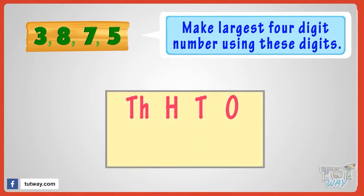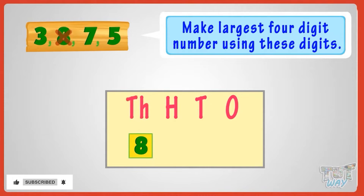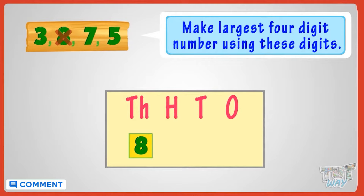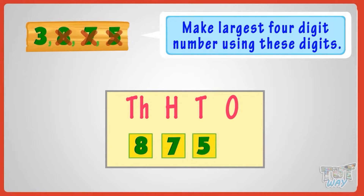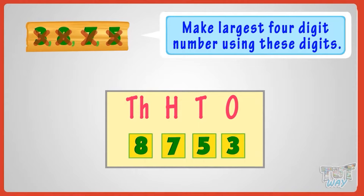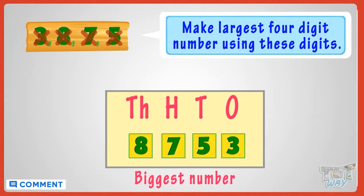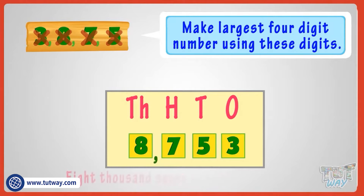To make the biggest number, we need to place the biggest digit at the biggest place value. Place the biggest number, that is 8, at the thousands place. Now place the next biggest number, 7, at the hundreds place. Then place 5 at the tens place, and finally place 3 at the ones place.